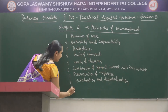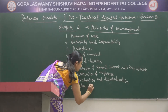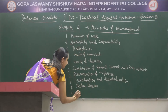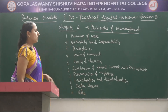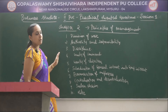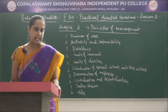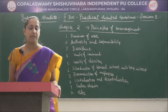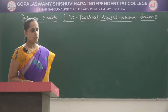Ninth is Scalar Chain, and tenth is Order. So these are 10 of Henri Fayol's principles of management. You can write any 10 Fayol's principles of management — no need to write any explanation. This is the practical oriented question asked from Chapter 2.